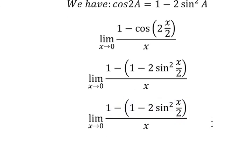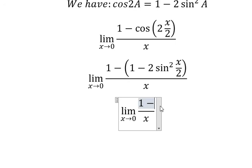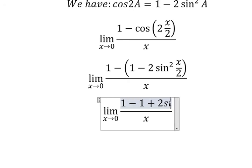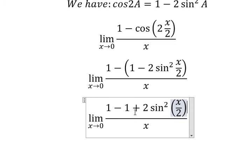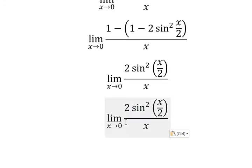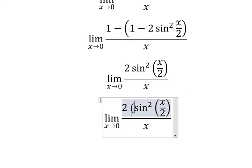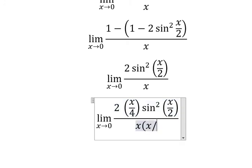Next, we open the parenthesis and get negative 1 plus 2 sine squared of x over 2. So 1 minus 1 cancels. Now I will multiply by x over 4 on the numerator and denominator, because we have power 2 and I want to put the expression inside with that power.